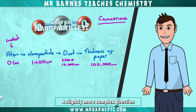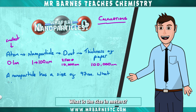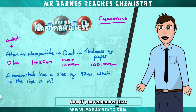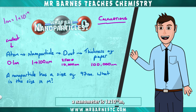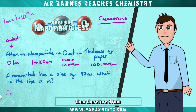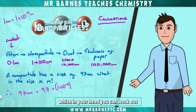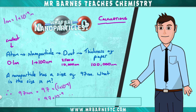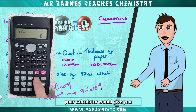A slightly more complex question: a nanoparticle has a size of 97 nanometers — what is the size in meters? If you remember that a nanometer is 1 times 10 to the minus 9 meters, then 97 nanometers is 97 times 1 times 10 to the minus 9, which is 97 times 10 to the minus 9. You can simplify this to 9.7 times 10 to the minus 8, which is the answer your calculator would give you.